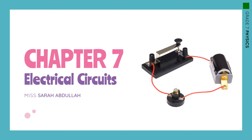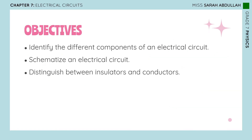Hello, grade 7. We are going to continue with our chapter on electrical circuits. These are the objectives we're going to cover during this week's lecture: you will be able to identify the different components of an electrical circuit, schematize an electrical circuit, and distinguish between insulators and conductors.